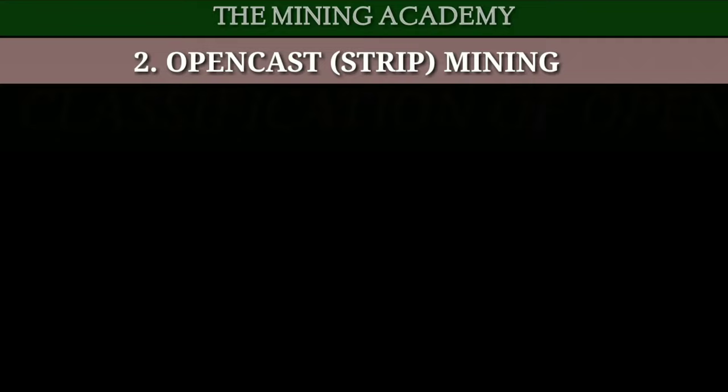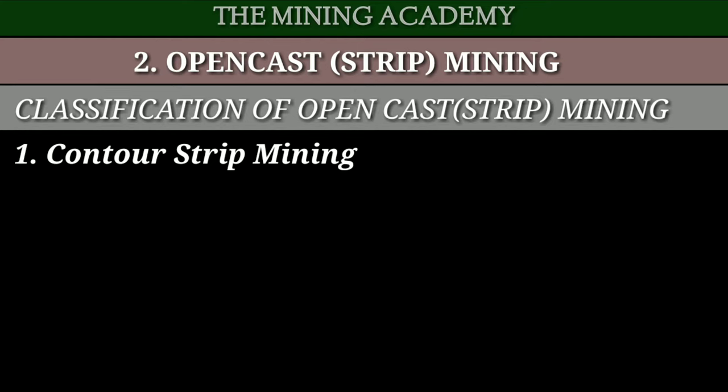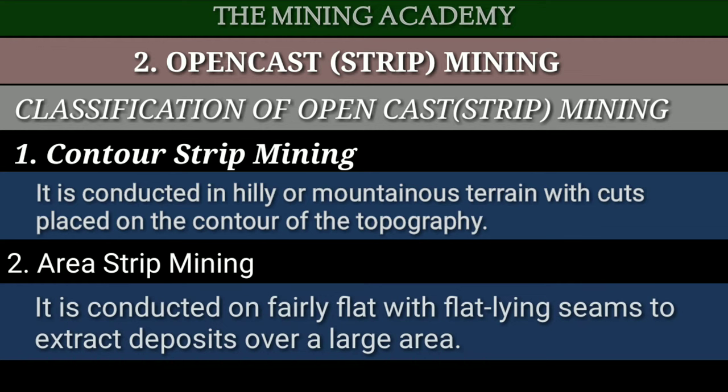Open cast mining ko do categories mein classified kiya gaya hai: pehla contour strip mining, doosra area strip mining. Contour strip mining ka use hilly ya mountain area mein karte hain. Area strip mining ka use flat seams se deposit ke extraction karne ke liye kiya jaata hai. Yah method large area occupy karti hai, isliye ise area strip mining kehte hain.